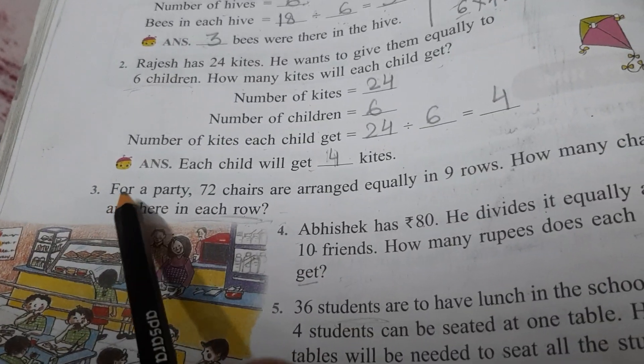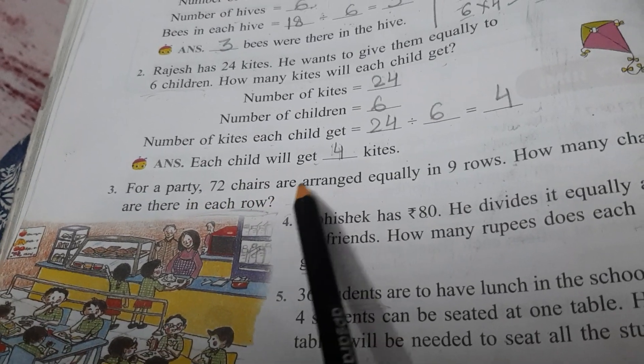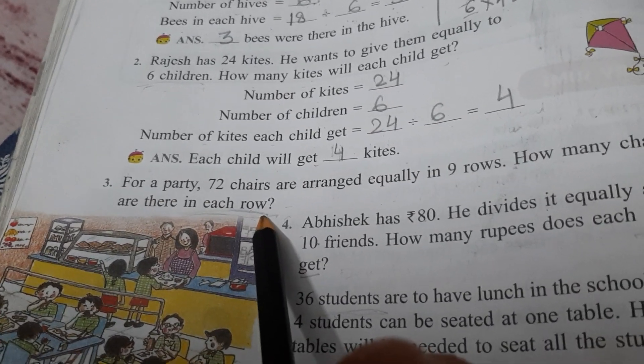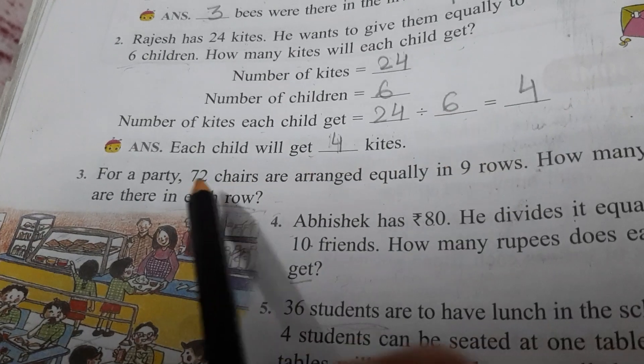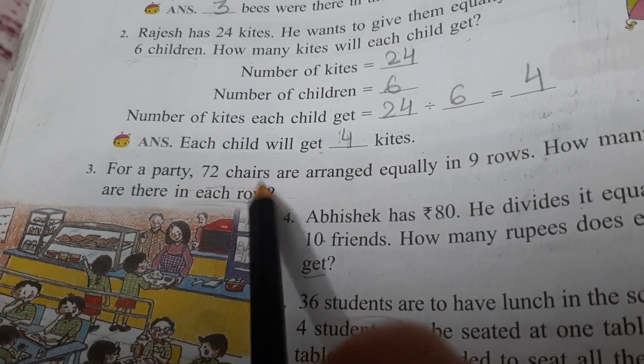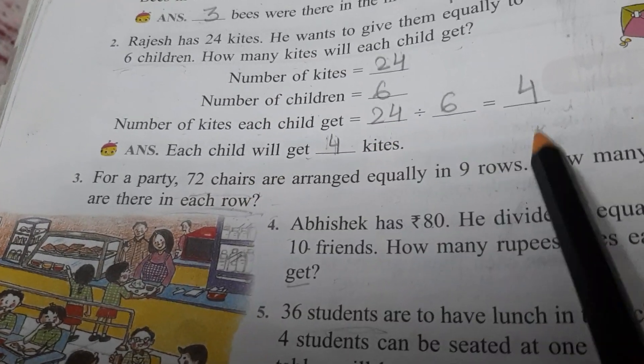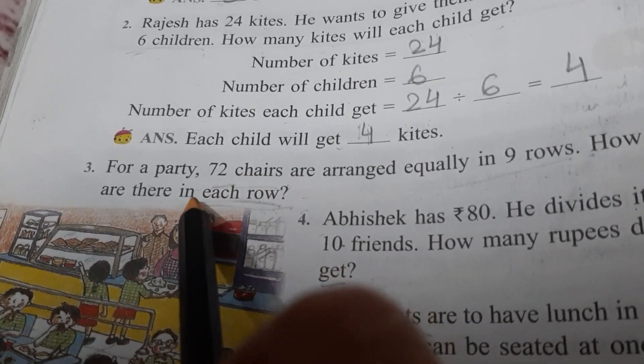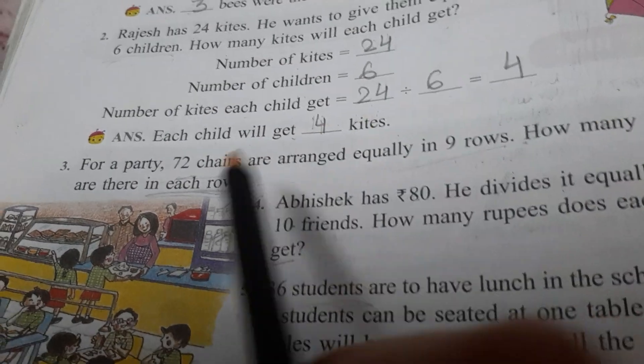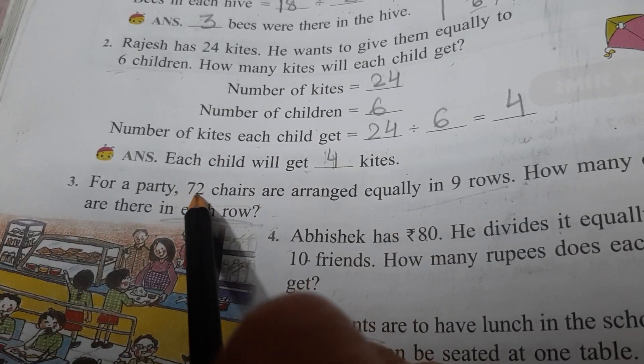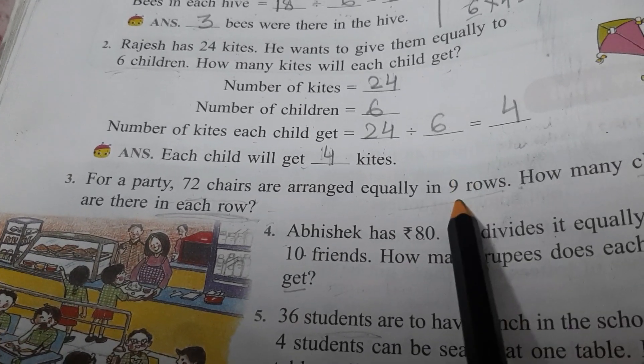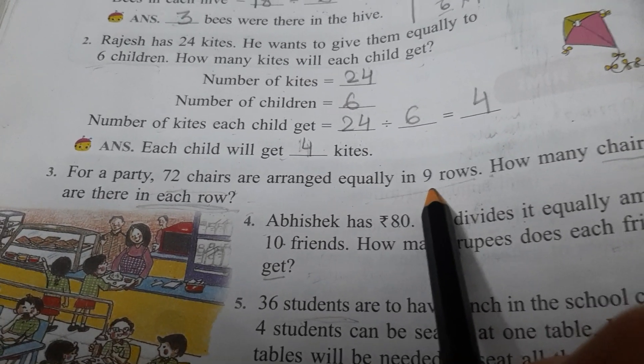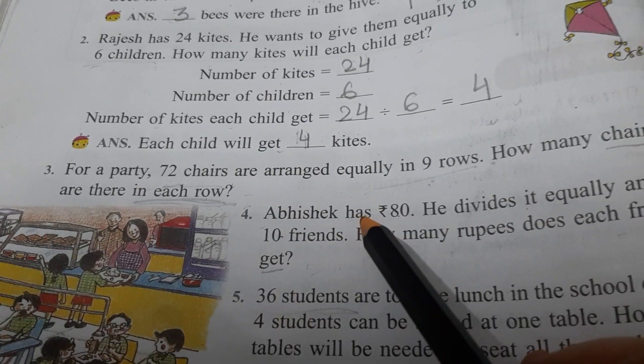Like see, in third sum, what is the statement? For a party, 72 chairs are arranged equally in nine rows. How many chairs are there in each row? So which two values are given? 72 chairs. It means in first line, you will write number of chairs, 72. Then number of rows, 9. What do you have to find? Number of chairs in each row. So that is 72 divided by 9. So then you will recall nines table and you will find your quotient. You will find your answer. So in fourth line, you will write the answer.